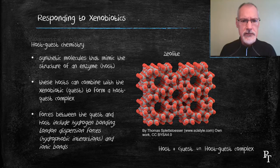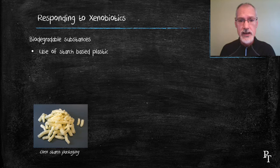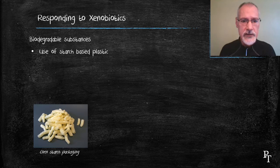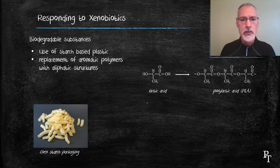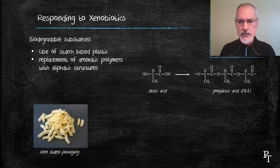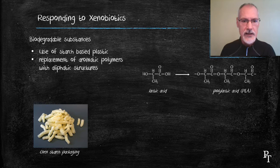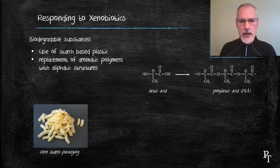We can also make the choices to use biodegradable substances. For instance, cornstarch has found its way into replacing a lot of plastics. Here's an example of cornstarch packaging, which replaced the styrofoam beads of the past. If we can replace plastics that have aromatic structures in them with aliphatic or linear structures, we make a substance that's more easily broken down in our environment because the aromatic ring is somewhat foreign to many organisms. Here's an example of a plastic coming from lactic acid forming polylactic acid, a linear molecule without the aromatic rings.